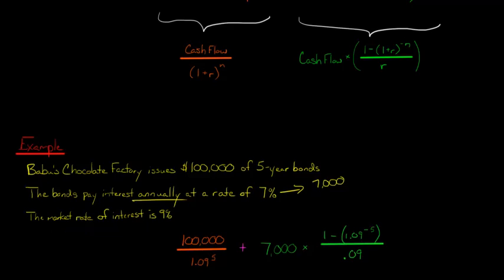So investors care about the market rate of interest. The only thing that we use this 7% for, which is, by the way, called the coupon rate of interest, or the stated rate of interest, so we only use that to figure out the annual interest payment. We don't use it to do any of the discounting.